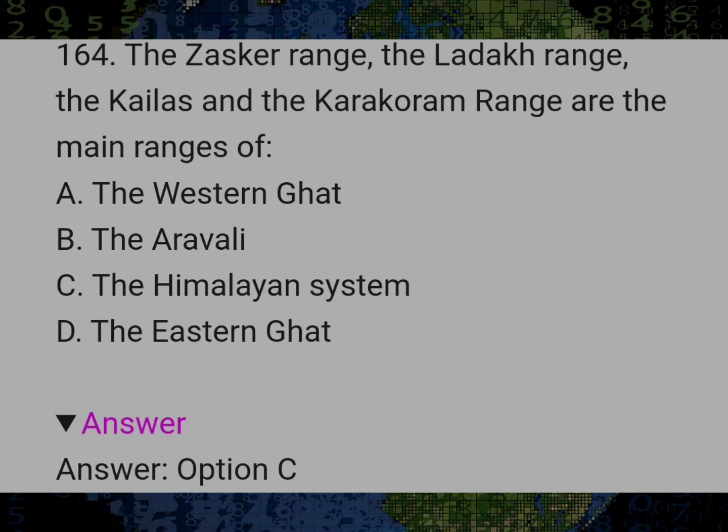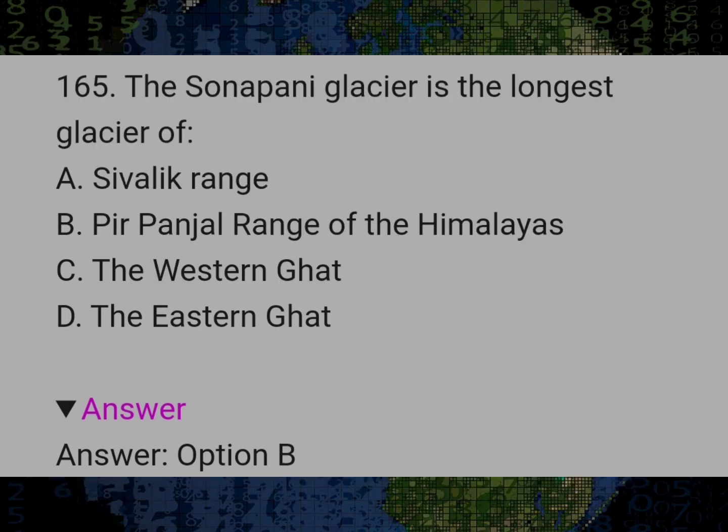The Zanskar range, the Ladakh range, the Kailash and the Karakoram range are the main ranges of? Answer C: The Himalayan system. The Sonapani Glacier is the longest glacier of? Answer B: Pir Panjal range of the Himalayas.